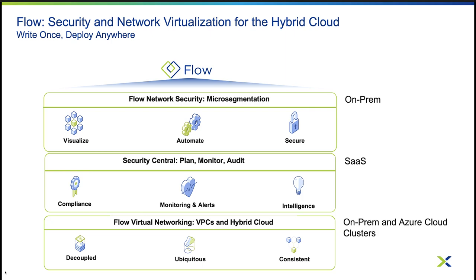Let's take a quick look at the different parts of Flow. Flow Network Security is the original Flow. It provides micro-segmentation between VMs in a VLAN and IP network space on the AHV hypervisor. Security Central is the Nutanix SaaS offering that provides auditing, compliance, and threat detection across your on-prem and cloud accounts. Security Central even offers security planning for your on-prem Flow Network Security-enabled clusters.